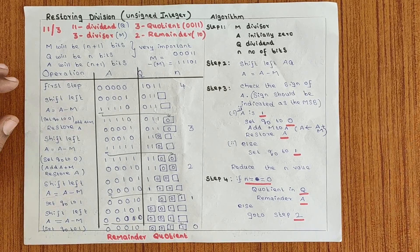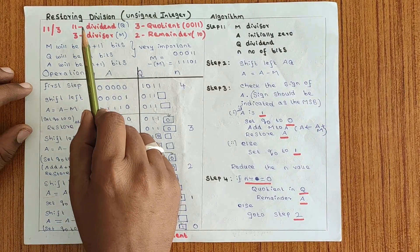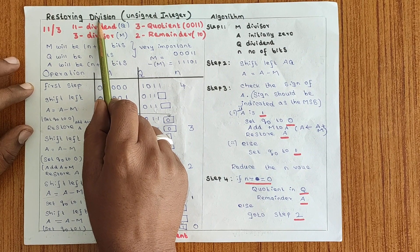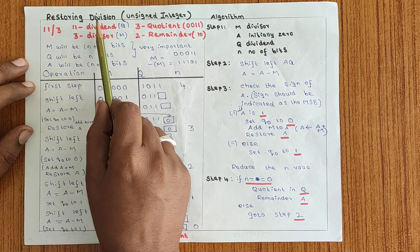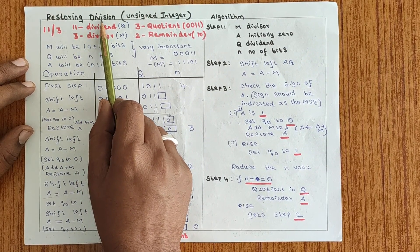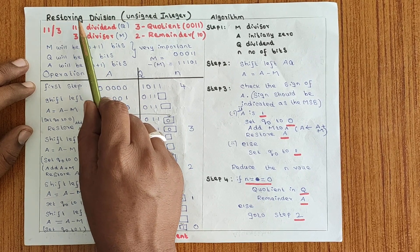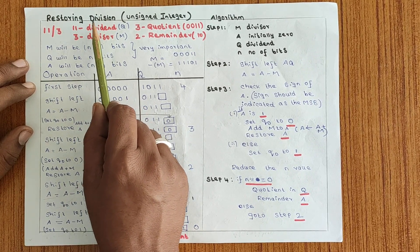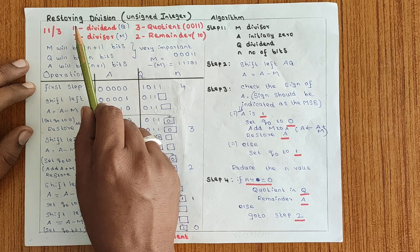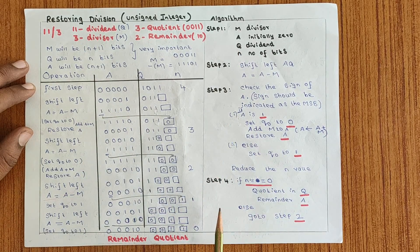Hello all. Today we are going to discuss about a topic called division by using restoring method. In division, we have two types: either we can use restoring method or non-restoring method. To perform a division by using restoring method, we need to know four steps.